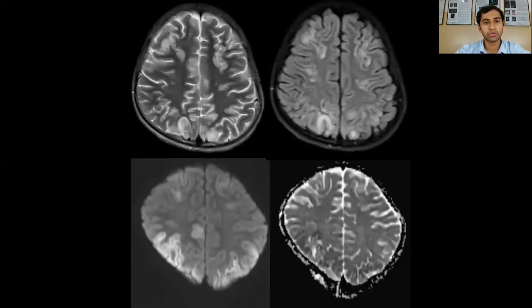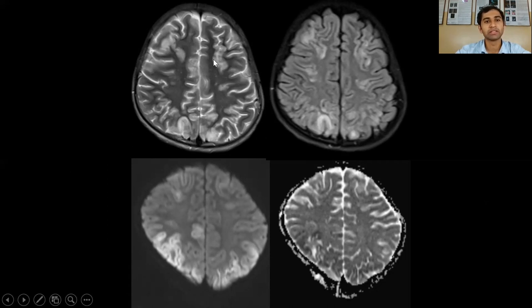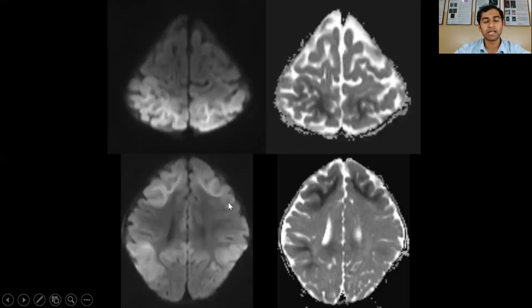This is the case of a 2-year-old male patient with complaints of generalized clonic seizures. On T2 and FLAIR images, you can see bilateral symmetrical hyperintensities in the frontal and parietal lobes. This area shows diffusion restriction on DWI and ADC maps.